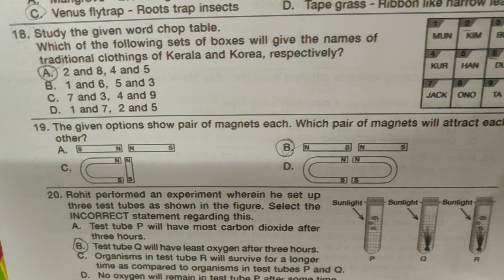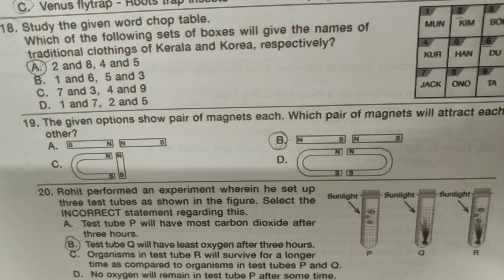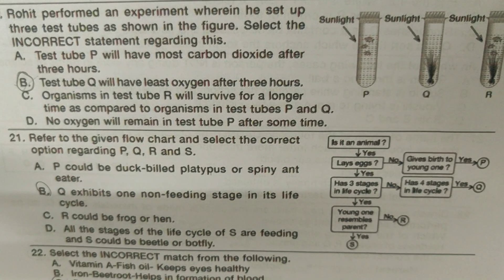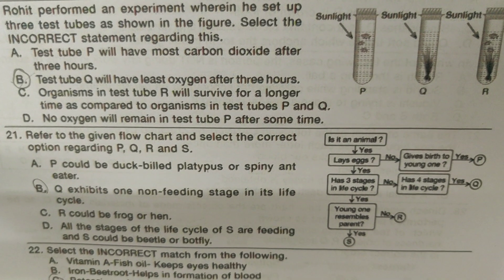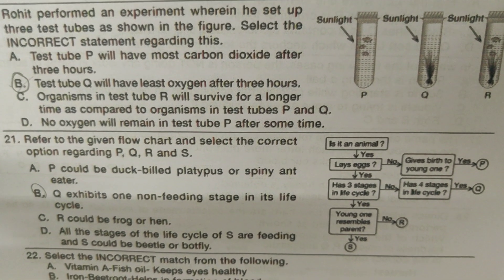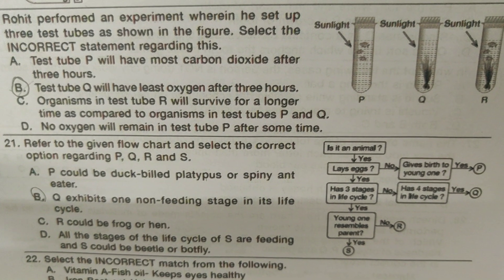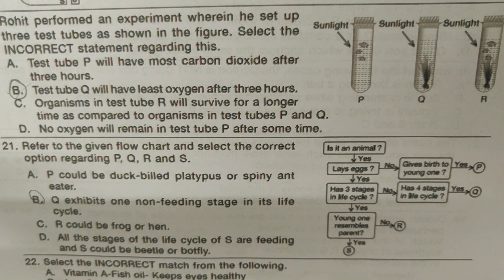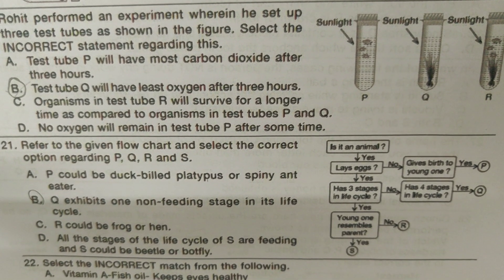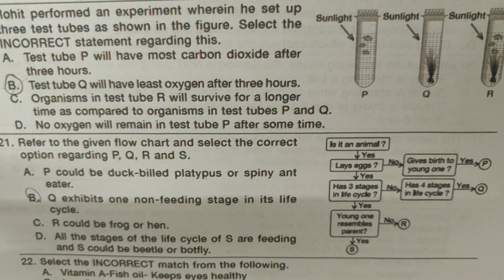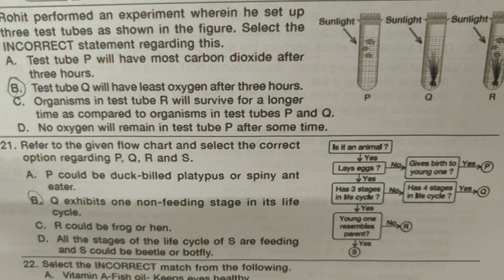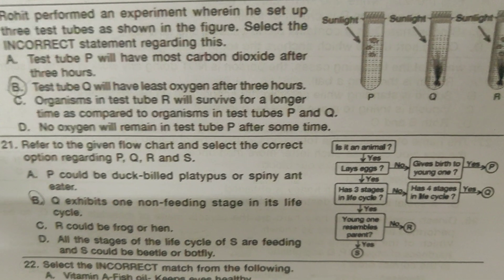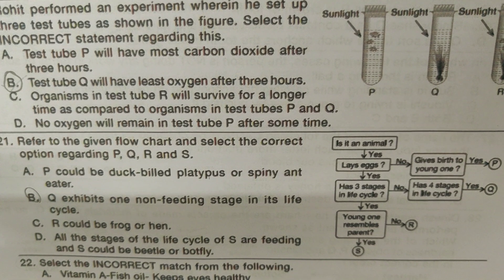Refer to the given flowchart and select the correct option regarding P, Q, R, and S. It's B — Q exhibits one non-feeding stage in its life cycle.